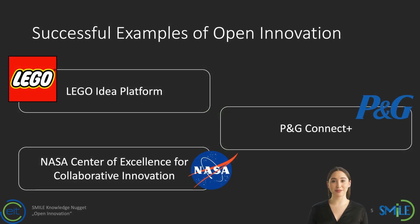Open innovation has been successfully implemented by various organizations. LEGO launched the LEGO Ideas platform, where fans can submit their own designs for LEGO sets. The designs that receive enough community support are considered for production, allowing LEGO to tap into the creativity and passion of their fans. Procter & Gamble created the Connect+Develop program, which invites external innovators, entrepreneurs, and researchers to submit ideas and technologies for collaboration. Through this program, P&G has successfully sourced innovative products and technologies from external partners.